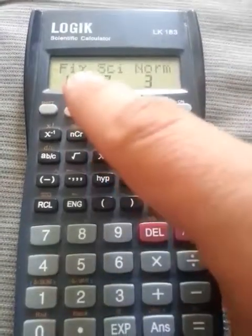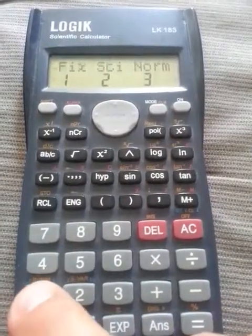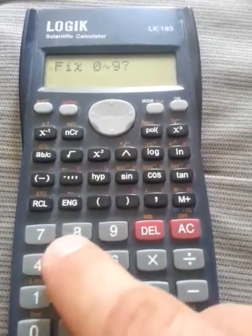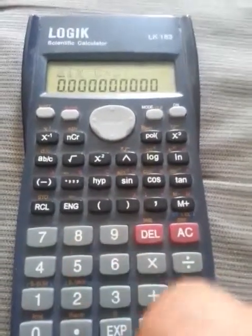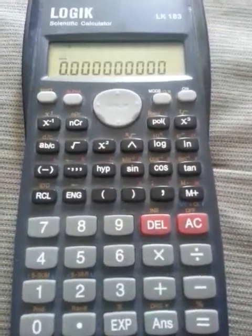Fix, that means press one. This allows you to select how many decimal places behind zero. You select nine.